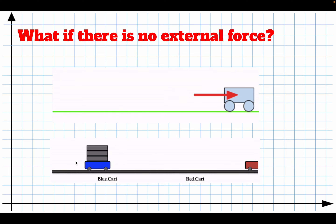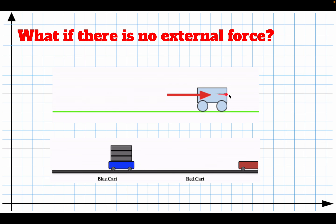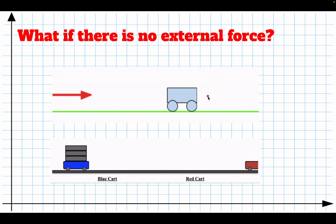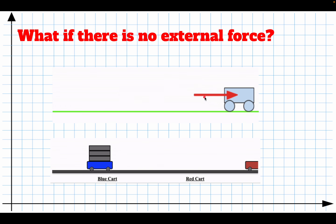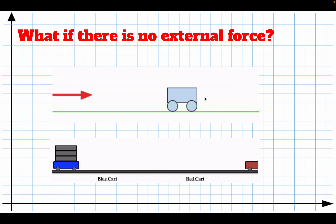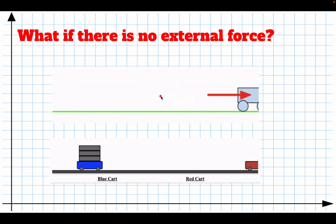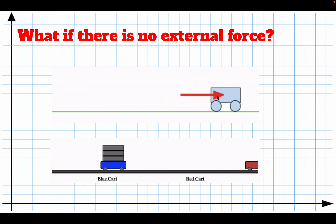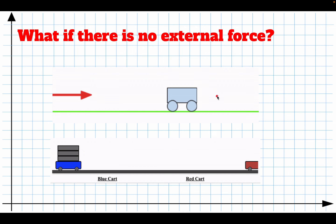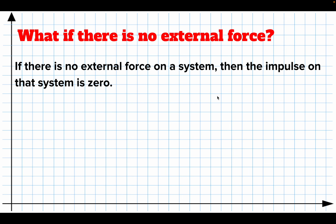Think about this: there's a blue car sitting still and an arrow flies to the right and smacks into the blue car, and the two of them move off. The arrow pushes on the blue car to the right; at the same time, the blue car pushes on the arrow to the left, causing the arrow to slow down. The blue car and the arrow together form a system. The forces they exert on each other are internal forces — not external forces. If there's no external force on a system, then the impulse on the system is zero.